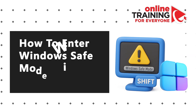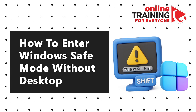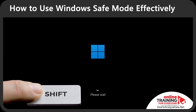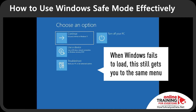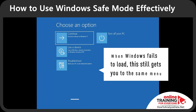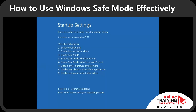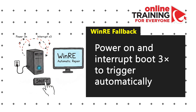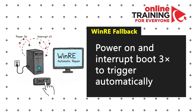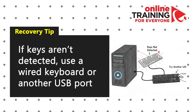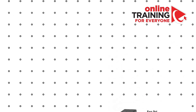Let me share how to enter Windows Safe Mode without the desktop by holding Windows+Shift during boot. Power on or restart Windows and hold Shift. Keep in mind that if Windows fails to load, it still brings you to the same menu. From the Recovery Environment, select Troubleshoot, Advanced Options, Startup Settings, then click Restart. If Windows fails to boot three times, it will automatically trigger the Windows Recovery Environment. Also, if keyboard keys are not detected, plug in a wired keyboard or use another USB port.